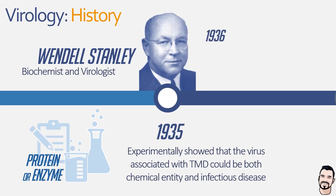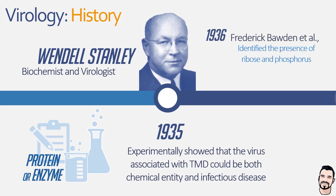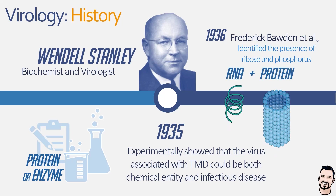Just a year later, Frederick Bawden and some of his colleagues identified the presence of ribose and phosphorus within the contagious liquid, meaning that the tobacco mosaic virus was a mix of RNA and protein, making it a ribonucleoprotein. This work was crucial in understanding the composition of a virus.